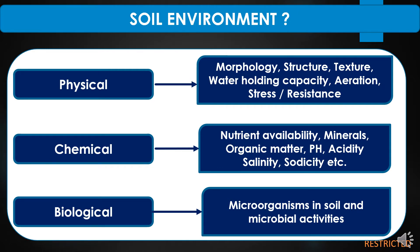Physical environment consists of morphology, structure, soil texture, water holding capacity, aeration and resistance. As chemical environment is concerned, it deals with nutrient availability, minerals, organic matter, pH, acidity, salinity and sodicity of soils. Biological environment is related to microorganisms in soil and microbial activities.